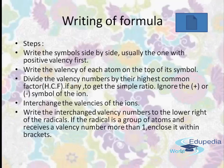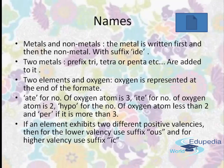Now let's understand the names of compounds. When we talk about valencies, we also discuss variable valencies. For metals and nonmetals, the metal is written first and then the nonmetal with the suffix IDE. For example, calcium nitride — calcium is the metal and nitrogen is the nonmetal, so the compound is calcium nitride with the IDE suffix.